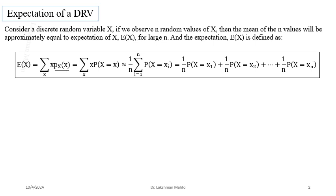If the weight is uniform in nature — meaning each number has equal probability of observation or realization — and there are n random numbers each with equal chance of being observed, then p(x) = 1/n, meaning the weight is 1/n. This is a very specific case we call the uniform discrete distribution.